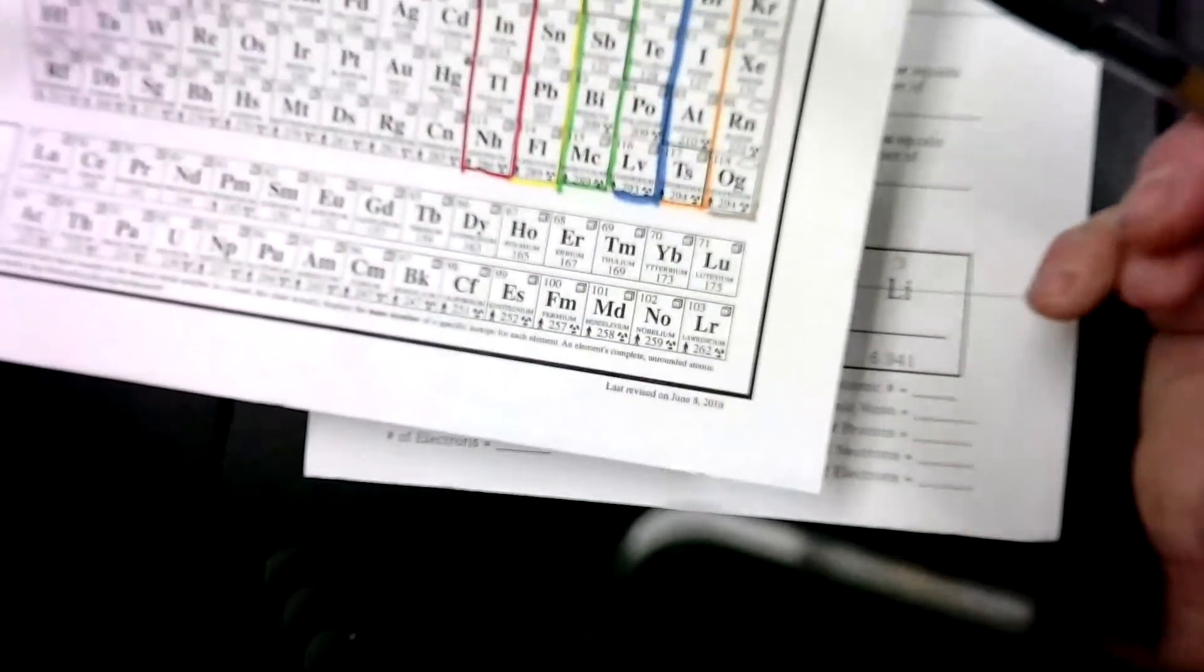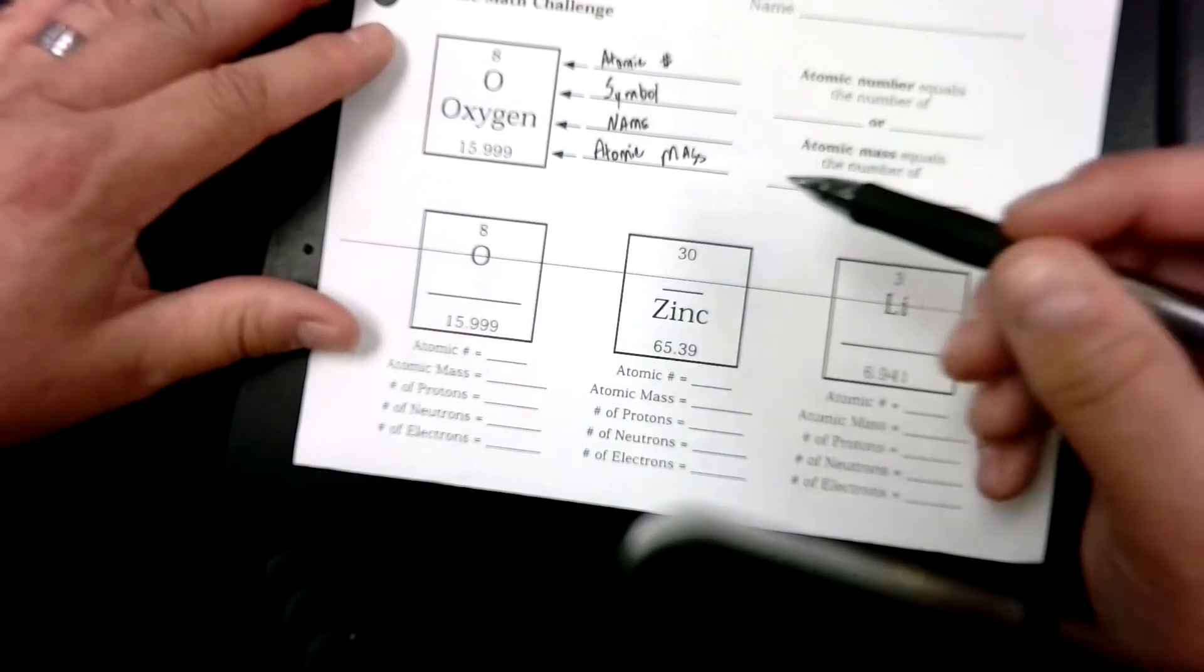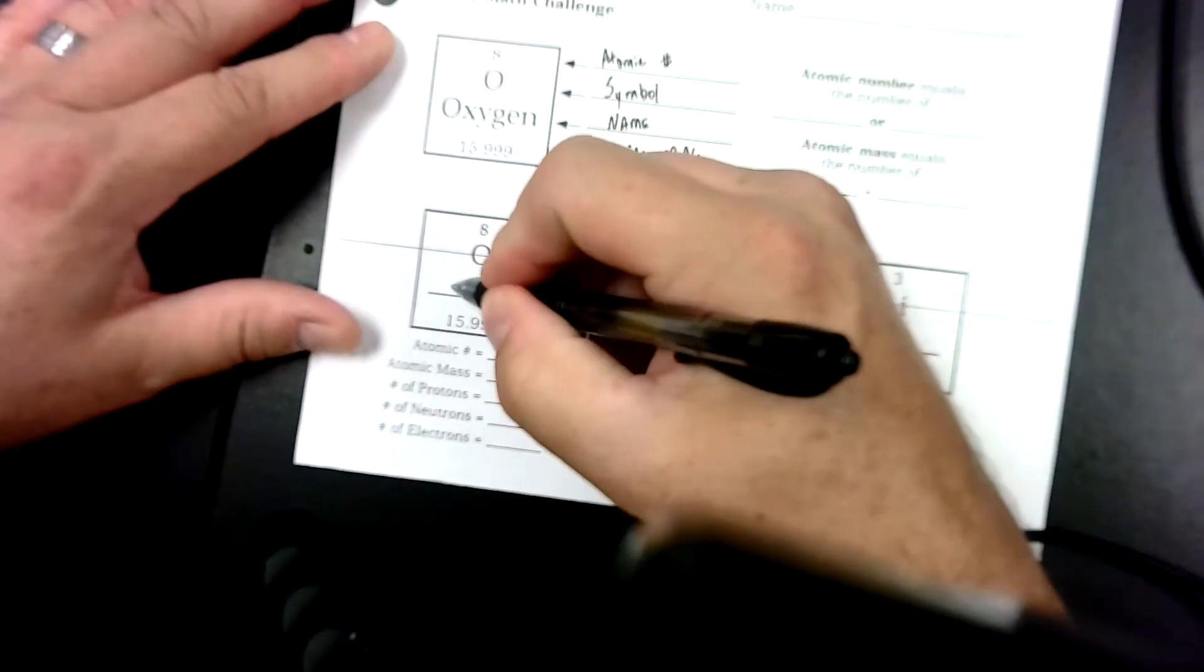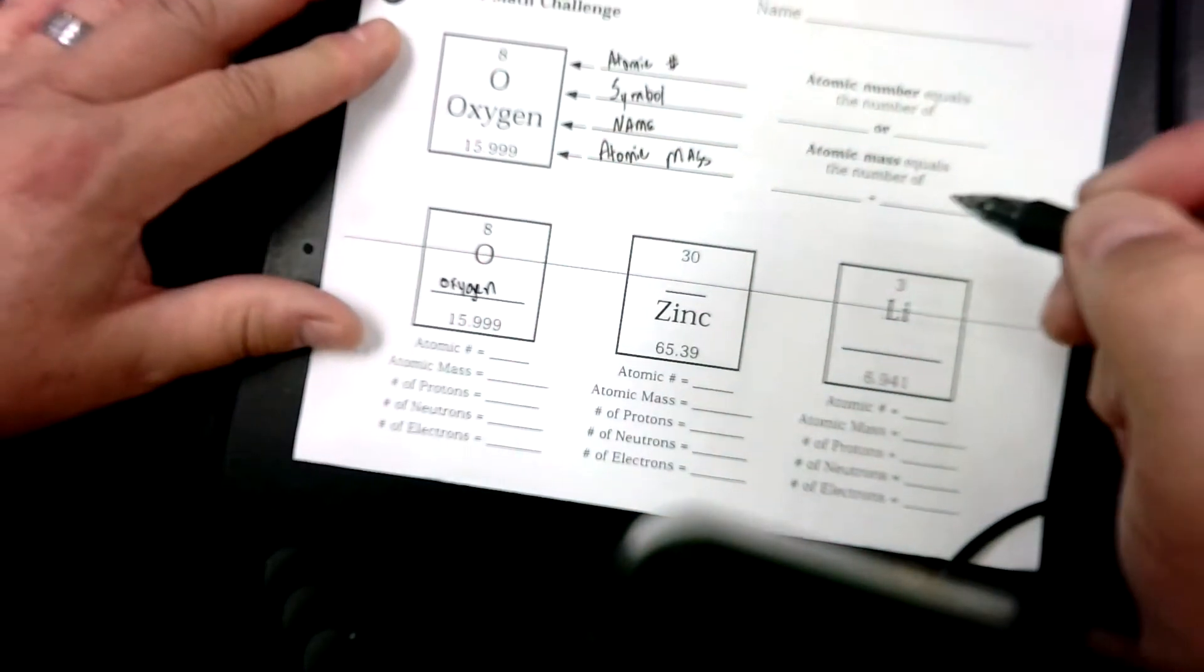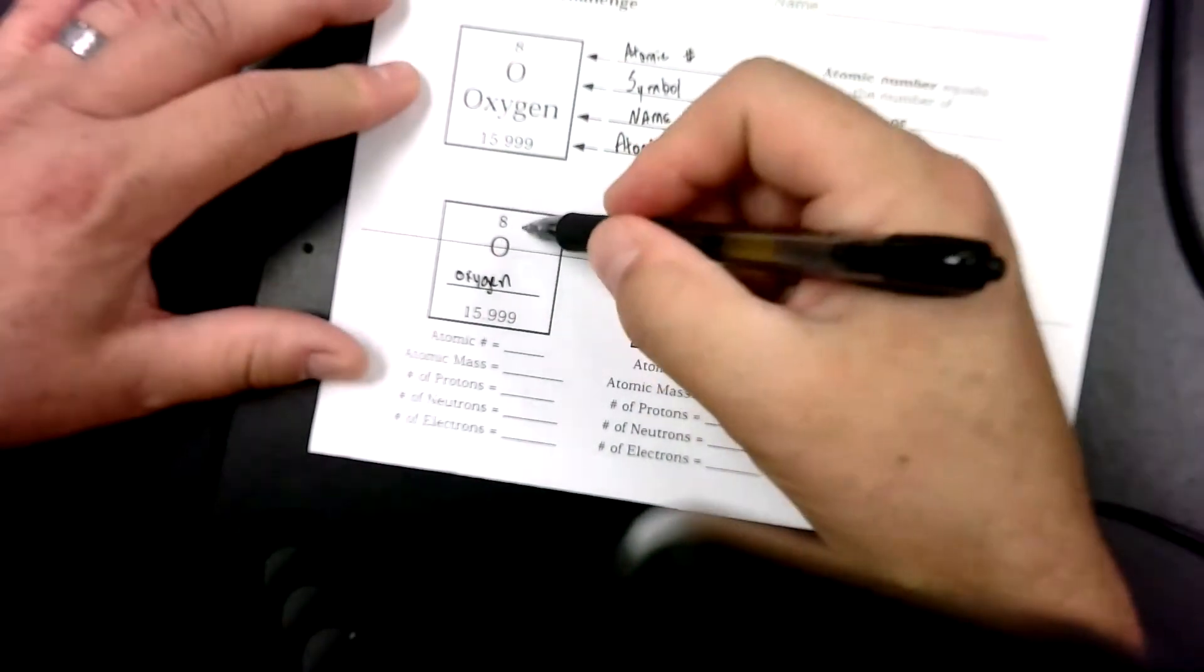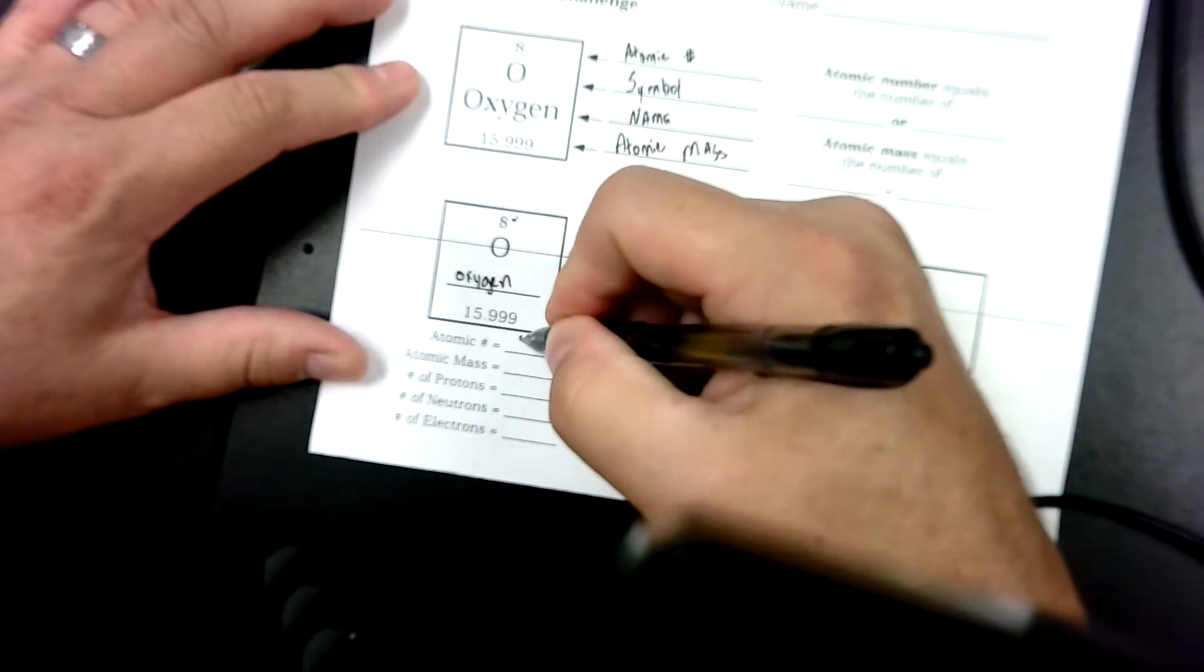In this case, we're looking at oxygen right here. Now, it's the example, so we can just use that. So for name, we just put the name in, oxygen. Now, the atomic number is right here. This is where we get that from, which is 8.